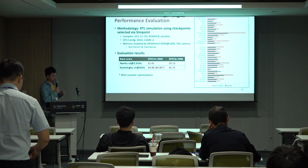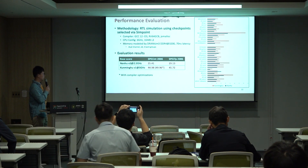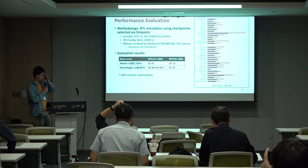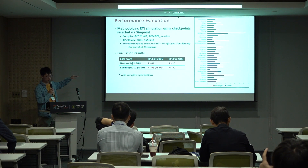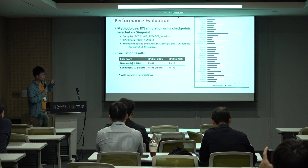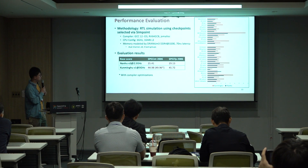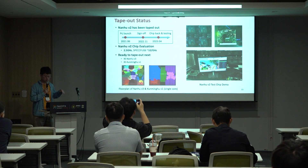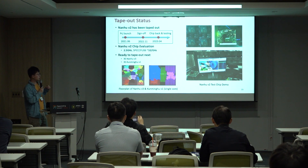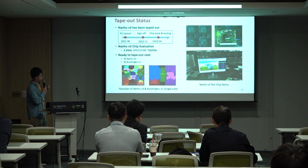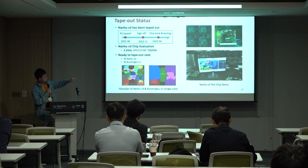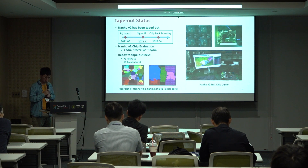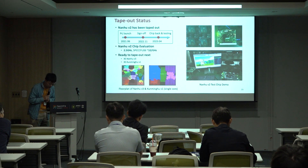For performance, this is the real performance evaluation of our chip. The second generation Nanhu achieves about 10 SPECint per GHz. The third generation Kunming achieves about 15 SPECint per GHz at 3 GHz. We have already received our chip back and brought it up last year, and there is a video showing our chip running.